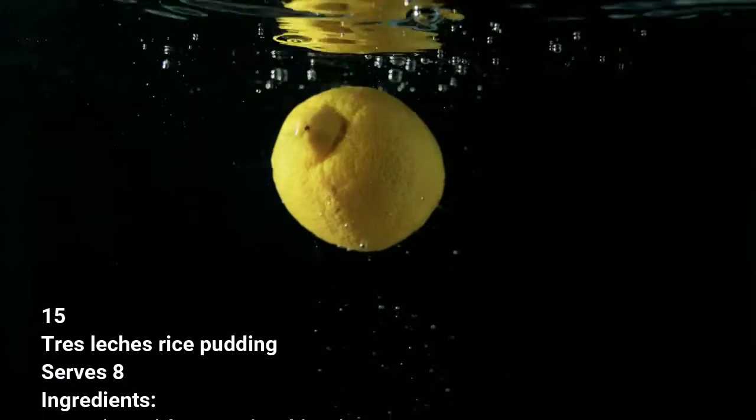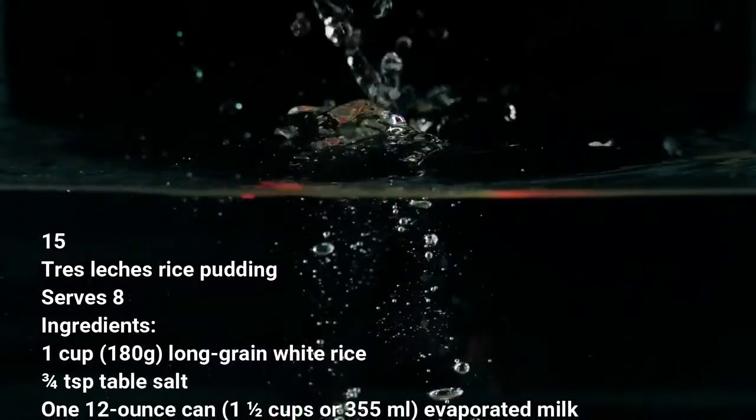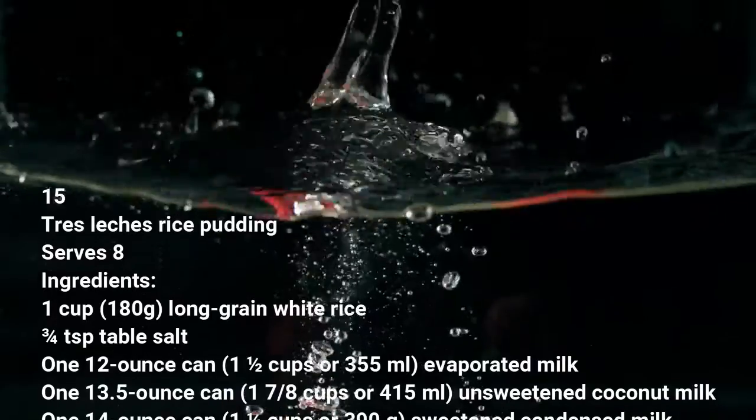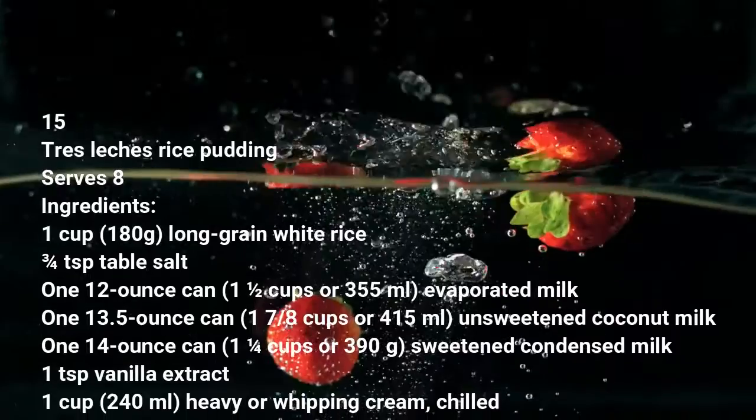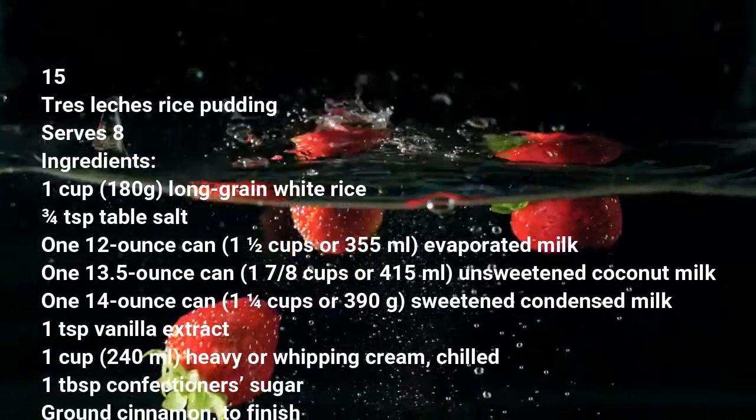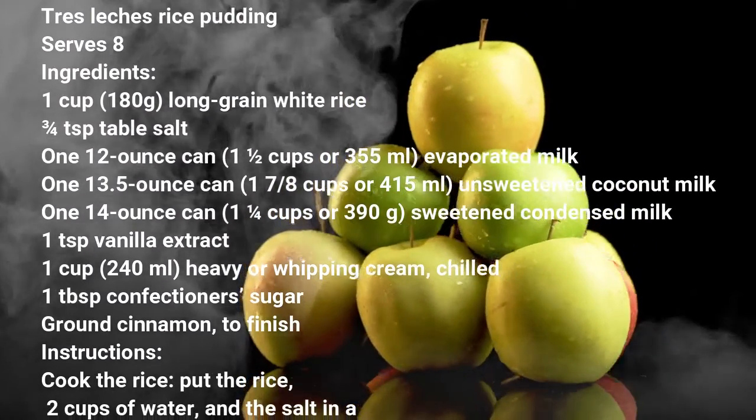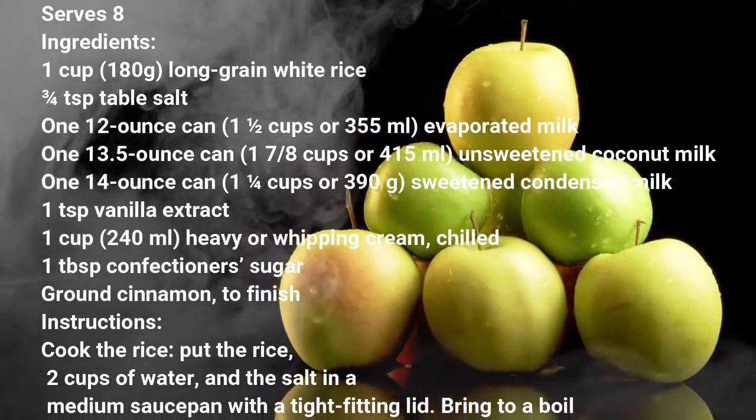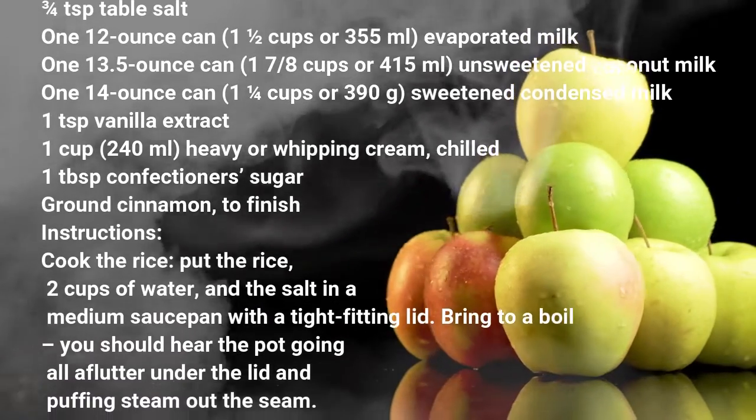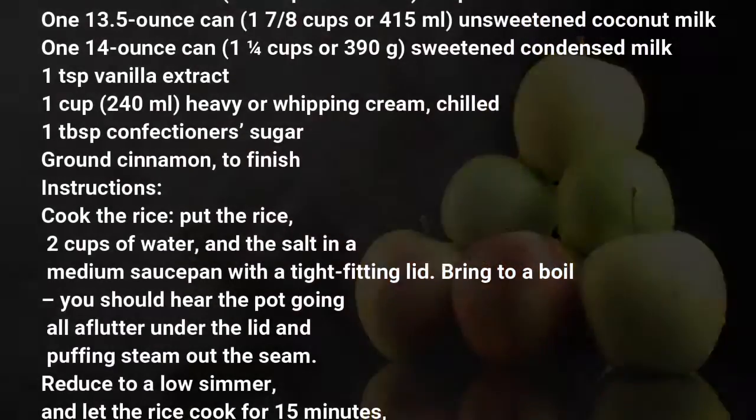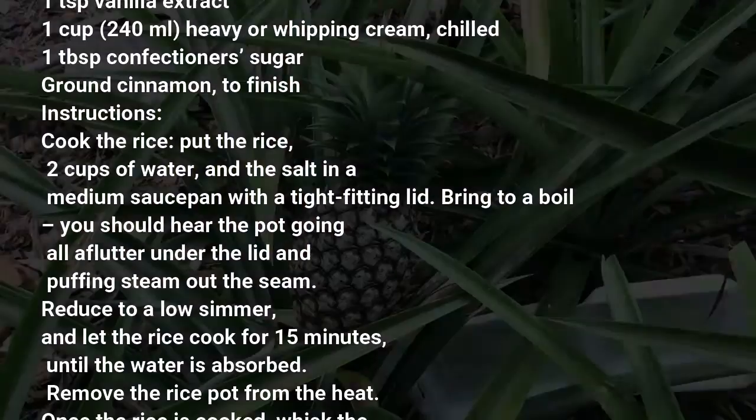15 Tres Leches Rice Pudding, Serves 8. Ingredients: 1 cup (180 grams) long grain white rice, 3/4 teaspoon table salt, 1 12-ounce can (1 1/2 cups or 355 milliliters) evaporated milk, 1 13.5 ounce can (1 7/8 cups or 415 milliliters) unsweetened coconut milk, 1 14-ounce can (1 1/4 cups or 390 grams) sweetened condensed milk, 1 teaspoon vanilla extract, 1 cup (240 milliliters) heavy or whipping cream chilled, 1 tablespoon confectioners sugar, ground cinnamon to finish. Instructions: